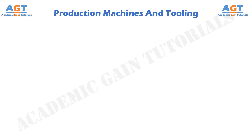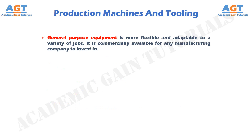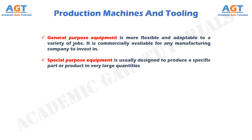Production equipment can be general purpose or special purpose. General purpose equipment is more flexible and adaptable to a variety of jobs, and is commercially available for any manufacturing company to invest in. Special purpose equipment is usually designed to produce a specific part or product in very large quantities. The economics of mass production justify large investments in special purpose machinery to achieve high efficiencies and short cycle times.